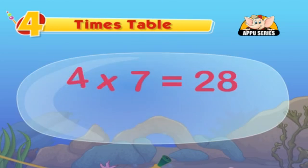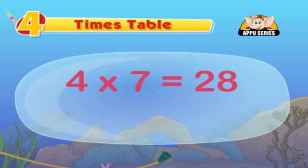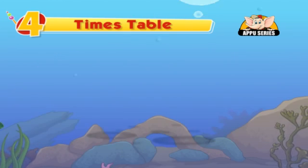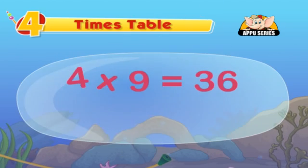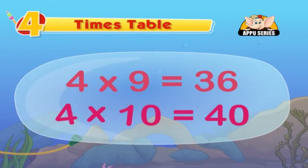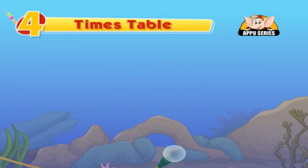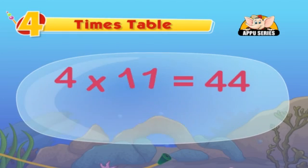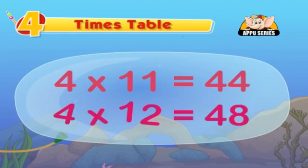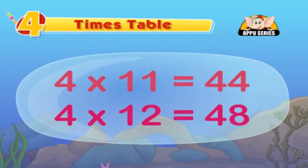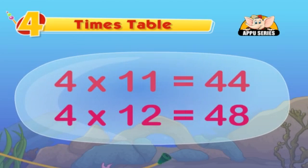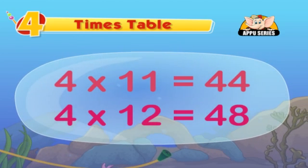We're doubling the number twice to get the answer. 4 7's is 28, 4 8's is 32, 4 9's is 36, 4 10's is 40, 4 11's is 44, 4 12's is 48. We're doubling the number twice to get the answer.